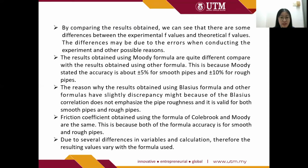By comparing the results obtained, there are some differences between the experimental f values and the theoretical f values. The differences may be due to errors when conducting the experiments. The results using the Moody formula are quite different compared with results from other formulas, because Moody stated accuracy is about ±5% for smooth pipes and ±10% for rough pipes. The slight discrepancies in the Blasius formula may be because the Blasius correlation does not emphasize pipe roughness and is valid for both smooth and rough pipes. The friction coefficients from the Colebrook and Moody chart are the same because both formulas account for smooth and rough pipes. Overall, due to differences in variables and assumptions, the resulting values vary with the formula used.